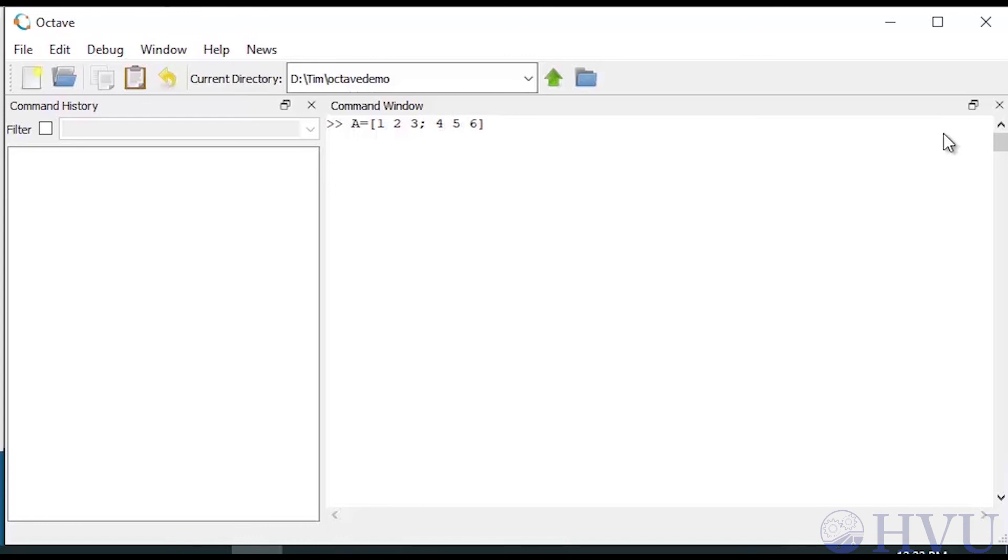So this array has two rows and three columns, and a second array B equals 0, 2, 1, semicolon, 4, 0, 3, close square brackets. B also has two rows and three columns.